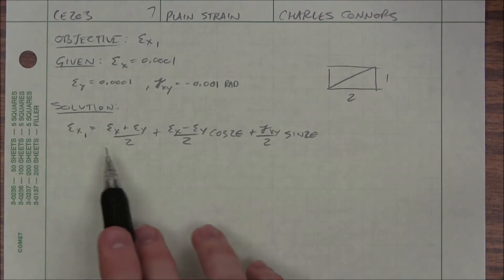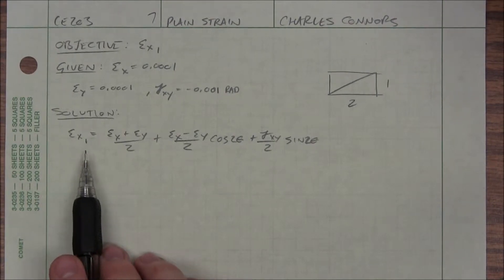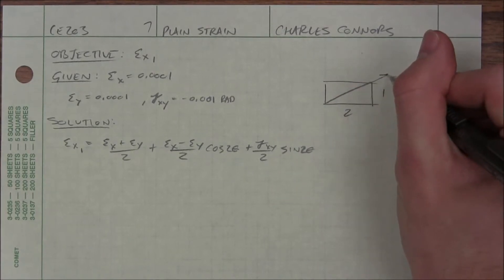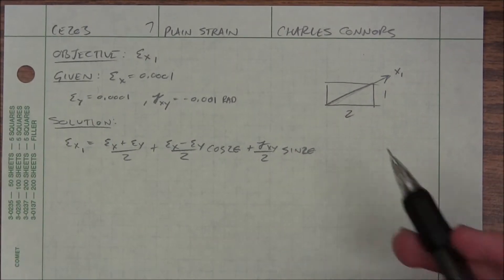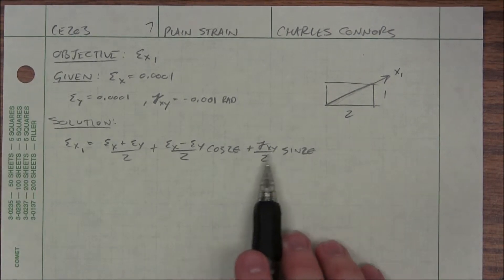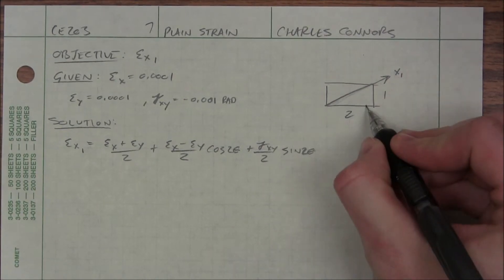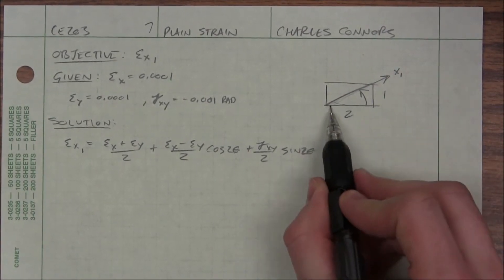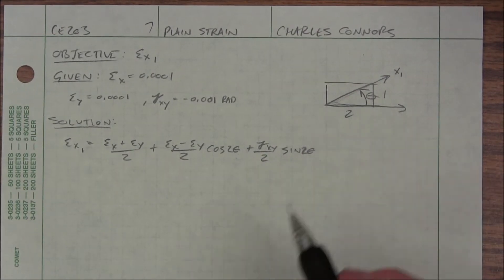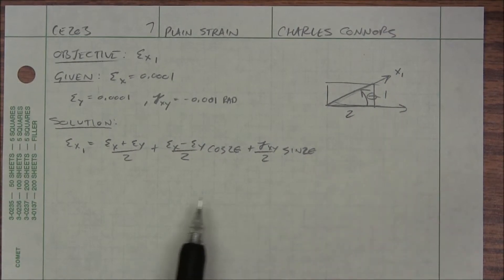Let me go through and explain what each of these variables mean. I have my strain in the x1 direction. What's the x1 direction? That's the direction that's desired. The angle is something I'm going to have to calculate, but that's the angle we put in here — our desired angle. Our desired angle is with reference to our x-axis. That's our theta. I'm going to use some trigonometry to figure that out, but the point is I measure it from the x-axis.